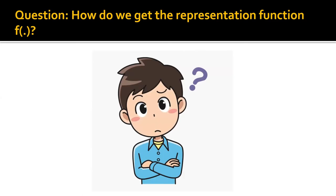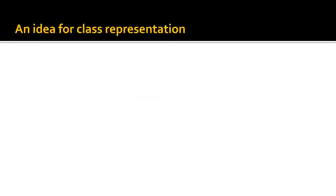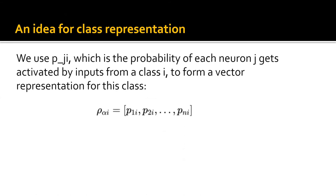But the question is, how do we gather representation function f? So in our work, we propose a new class-level representation. In particular, we use Pji, which denotes the frequency of each neuron j gets activated by input from class i to form a vector representation for class i, denoted as rho_alpha(i).